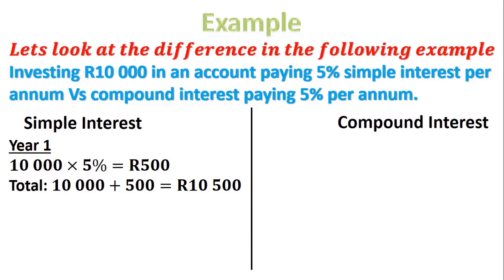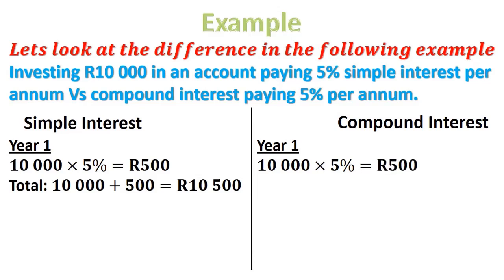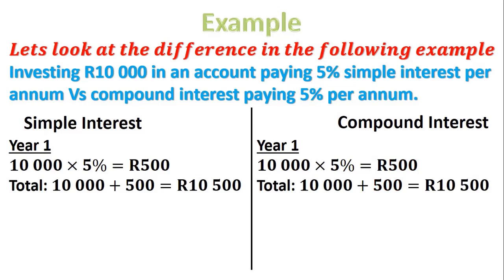Now let's look at compound interest for year one. In a very similar method, we take 10,000 Rand, multiply it by 5%, and again we get 500 Rand. That means our total is 10,000 plus 500, giving us a grand total of 10,500 Rand.